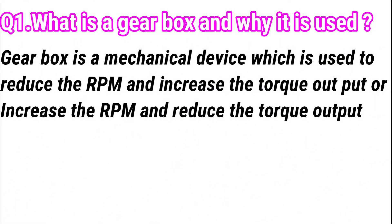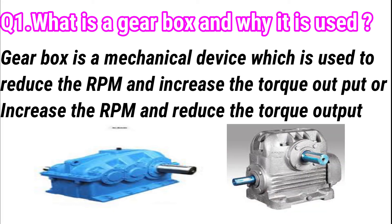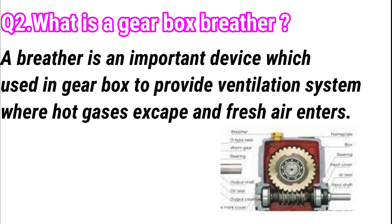The first question: what is a gearbox and why is it used? A gearbox is a mechanical device used to reduce RPM and increase torque output, or increase RPM and reduce torque output of a motor. A gearbox is used between a motor and the machine where you can increase or decrease the speed or torque as per your requirement.